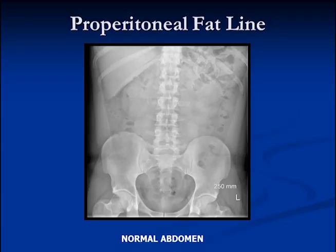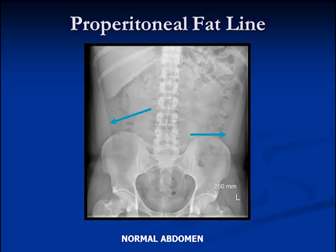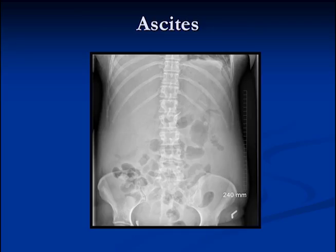We're going to talk about another line that we can see called the properitoneal fat line. On this normal supine view of the abdomen, you can see the kidneys and the edge of the liver. If you look closely, you can see an interface between dark and white on either side — this is called the properitoneal fat line. On the outside is soft tissue of the abdominal wall; on the inside is fat in the peritoneum. Immediately next to this line is bowel — you can see large bowel with little fecal material immediately adjacent to the properitoneal fat lines on both sides.